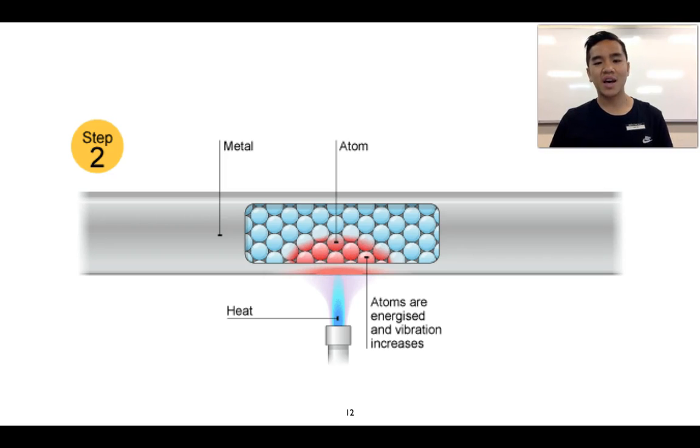And when they do that, they can actually vibrate more. Their kinetic energy increases, so they vibrate more, and those vibrations can then be transferred to the surrounding atoms. Now, because we've got a metal here, which is a good conductor, this means that it allows the atoms to vibrate and to transfer that energy quite readily between neighbouring atoms.